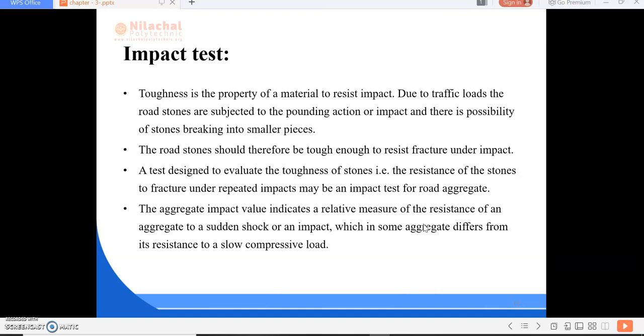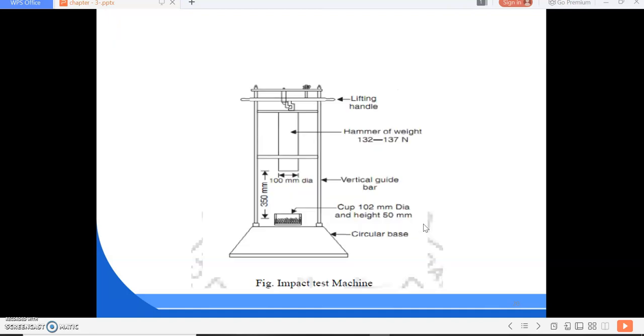Next is impact test. Here we are doing impact test to find out the toughness property. Toughness is the property of a material to resist impact. Due to traffic loads, the road stones are subjected to the pounding action or impact and there is possibility of stones breaking into smaller pieces. The road stones should therefore be tough enough to resist fracture under impact. It is designed to evaluate the toughness of stones. The aggregate impact value indicates a relative measure of the resistance of an aggregate to a sudden shock or impact, which in some aggregate differs from its resistance to a slow compressive load.